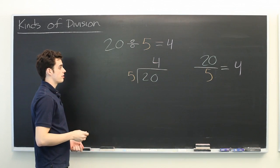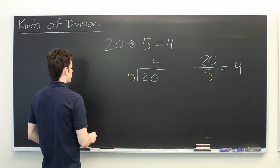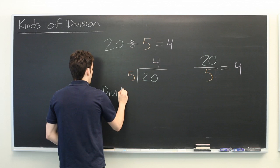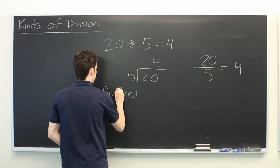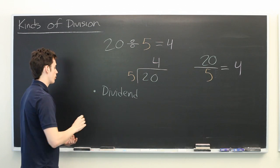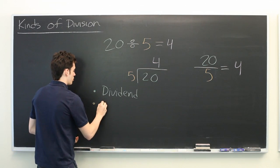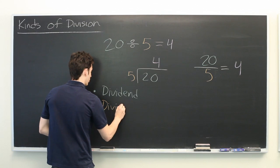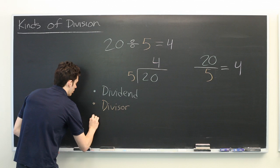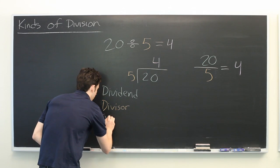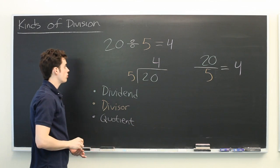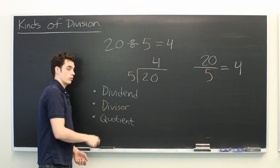Now in all three cases the division problem has three different components. The green number which is our dividend, the orange number which is our divisor, and the purple number which is our quotient. No matter what form you put your division problem in, it will always have these three components.